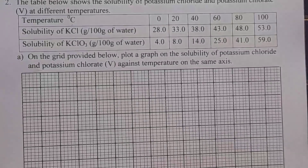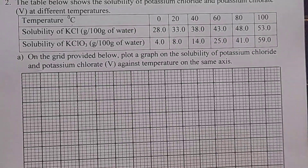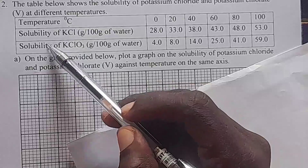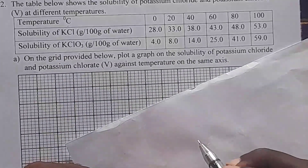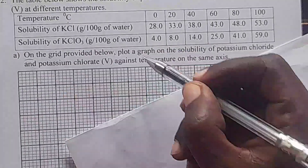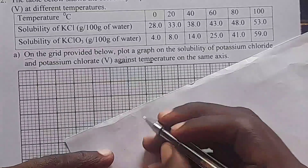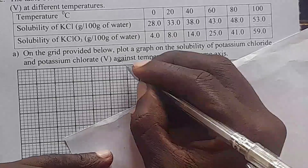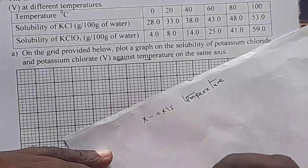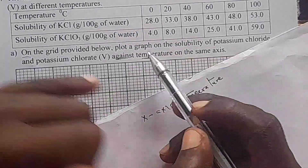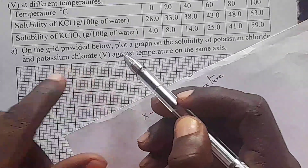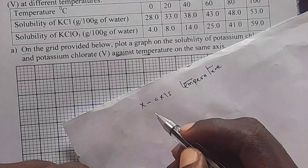First, let's get our scales and decide which variable goes on which axis. To know which one goes on the x-axis, read the question: after the word 'against', that variable goes on the x-axis. So we have 'against temperature', meaning temperature is plotted on the x-axis. The solubility of potassium chloride and potassium chloride 5 will be on the y-axis.